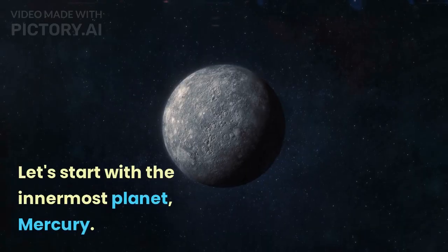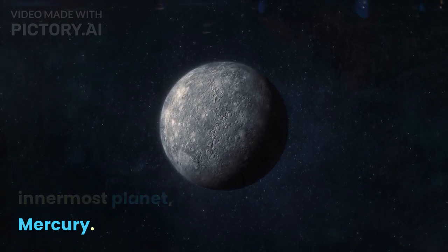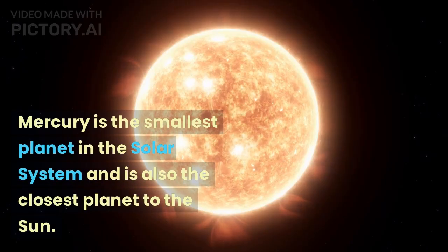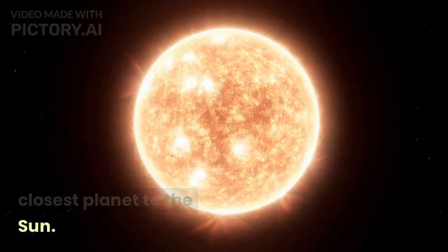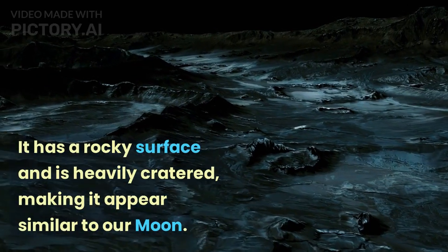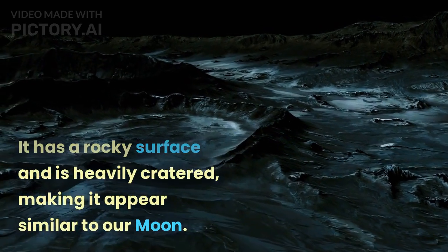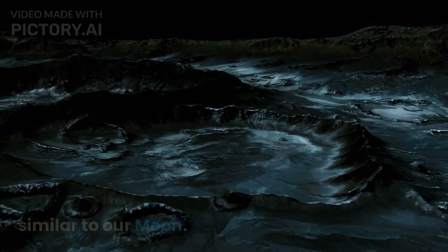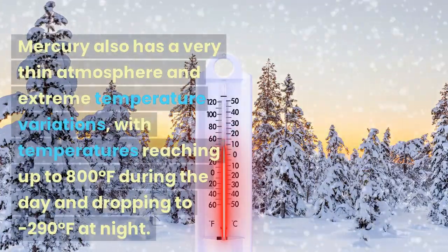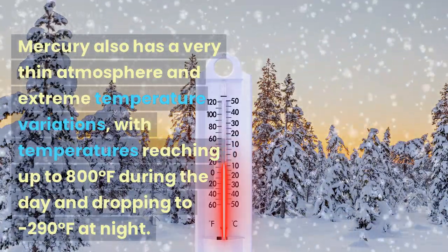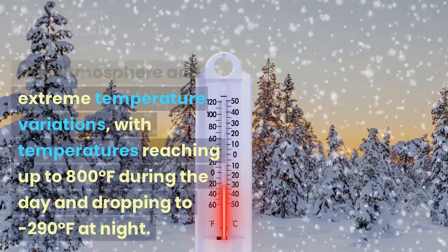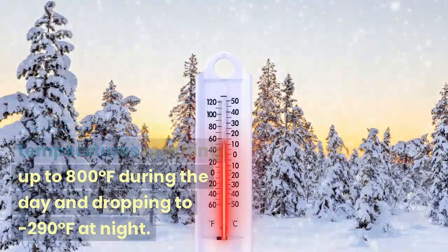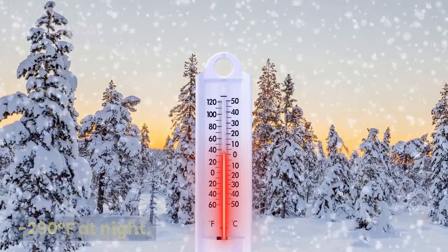Mercury. Let's start with the innermost planet, Mercury. Mercury is the smallest planet in the solar system and is also the closest planet to the sun. It has a rocky surface and is heavily cratered, making it appear similar to our moon. Mercury also has a very thin atmosphere and extreme temperature variations, with temperatures reaching up to 800 degrees Fahrenheit during the day and dropping to minus 290 degrees Fahrenheit at night.